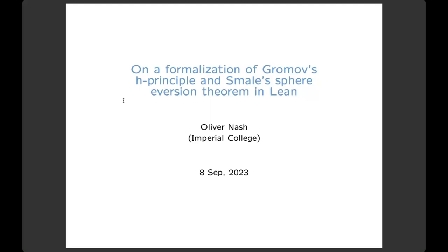Many, perhaps all of you will have heard of this celebrated result of Smale's from the 1950s — that you can evert a sphere, which I'll explain. Some years ago, Patrick Massot thought this would be a really good target for formalization, but not just to evert the sphere. What's much better is not to have an endpoint result — there aren't too many theorems that begin with the sphere eversion result, and you don't tend to apply it that much. What we really like to add to Mathlib are results that have many corollaries.